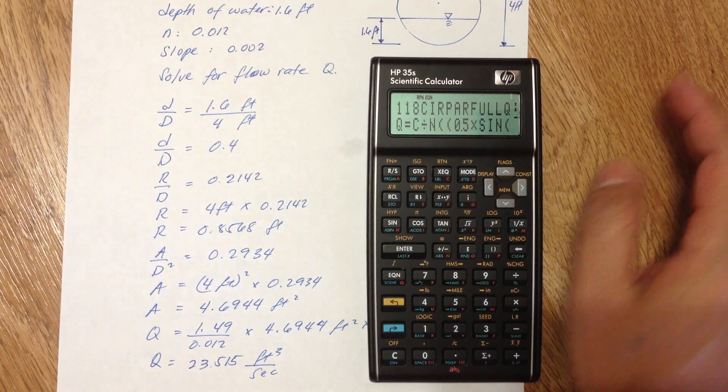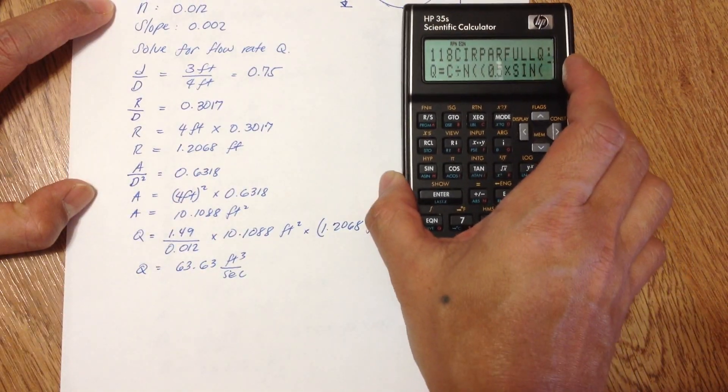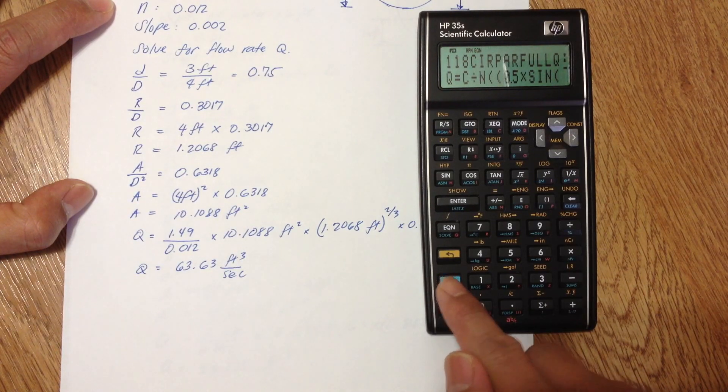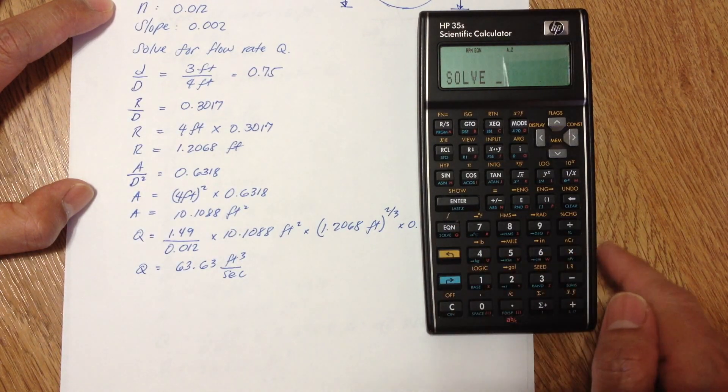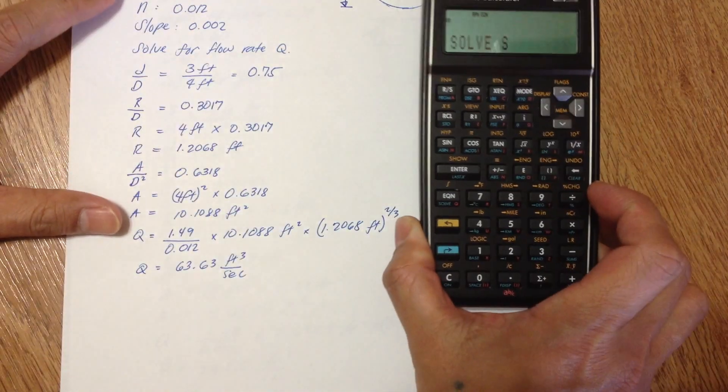Let's say going back to this equation, you need to find the slope. All you have to do is press the blue arrow and then solve S. S is this one, alright.